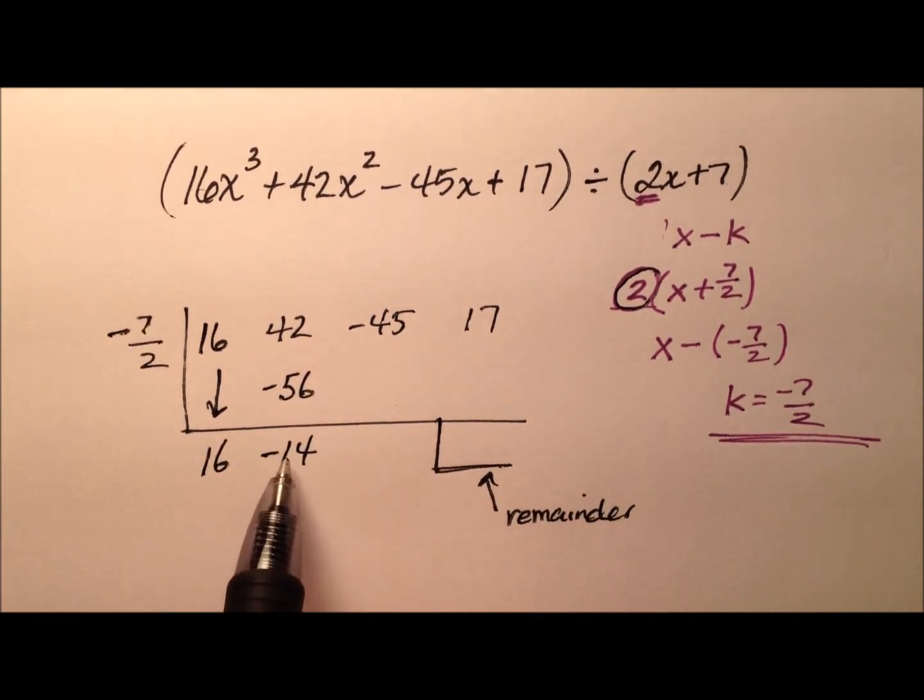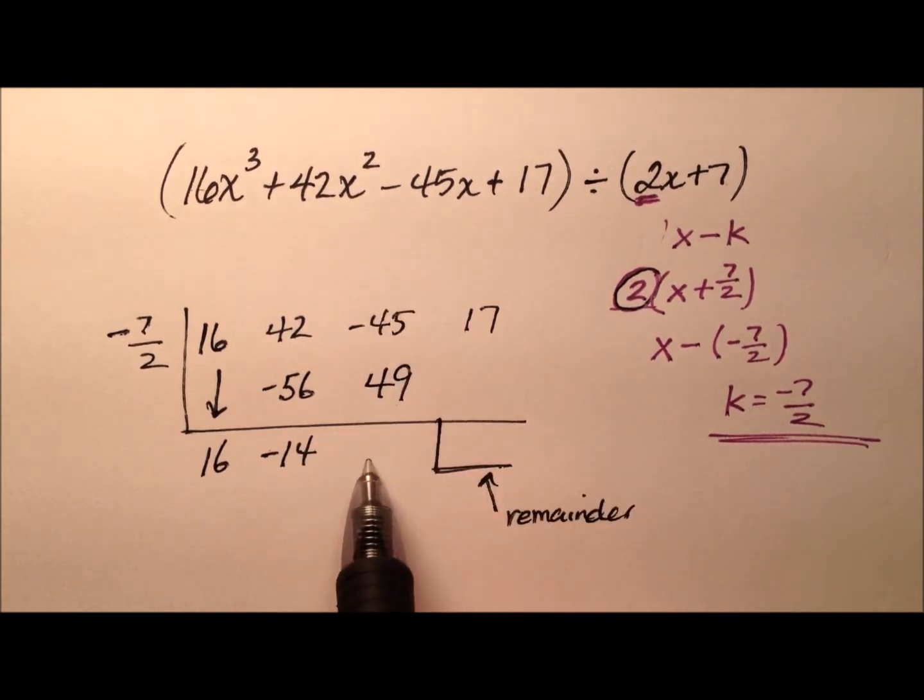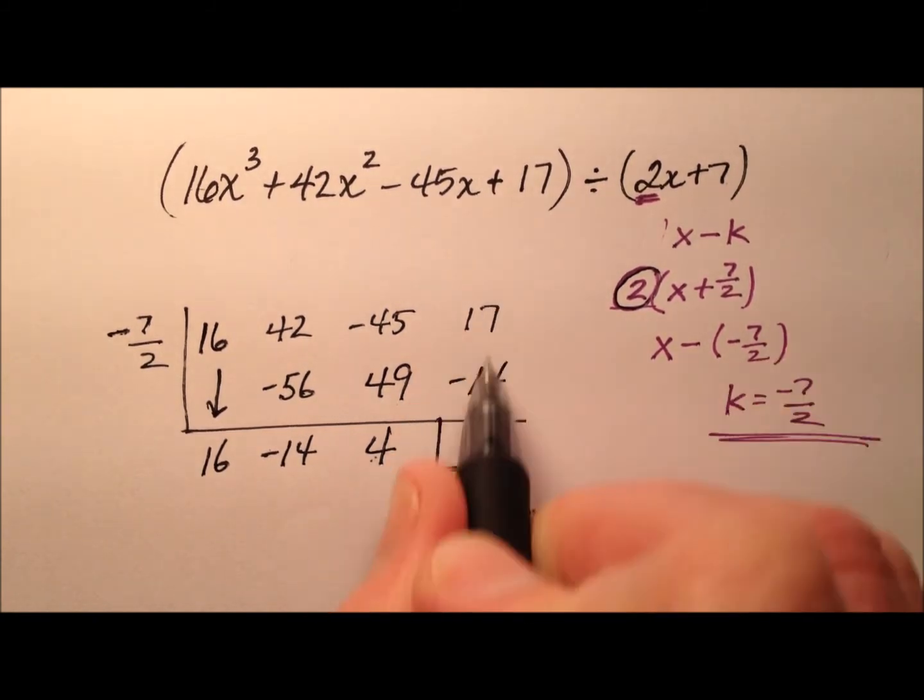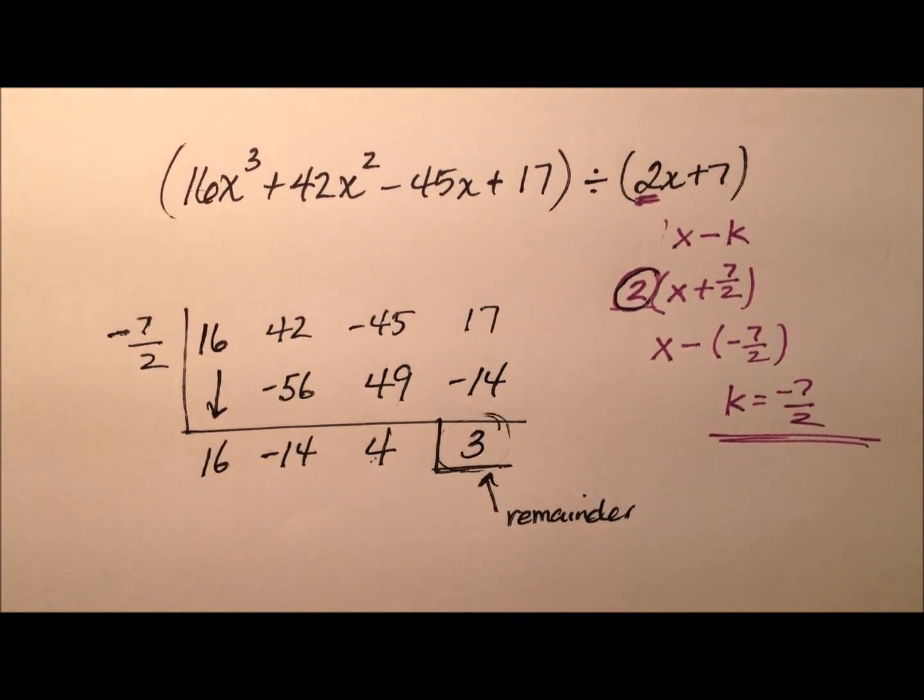And negative 7 halves times negative 14 looks like positive 49. So when I add this column, I'll have 4. And then negative 7 halves times 4 looks like it's going to be negative 14. And when I add, I have 3. So I am in fact going to have a remainder in this case.